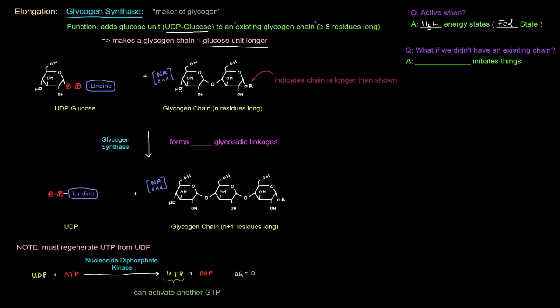So imagine you have a glycogen chain here that is some number of residues long, some n residues long. I've only shown two here. By the way, I indicate here that this is not an OH group. It's an OR group. That's just me trying to indicate that the chain is longer than what I've shown here. I've only drawn two to make it so that it's not taking up the whole page or screen.